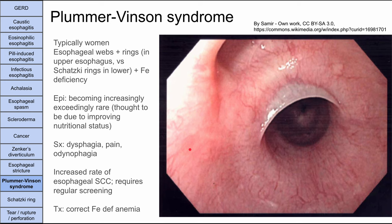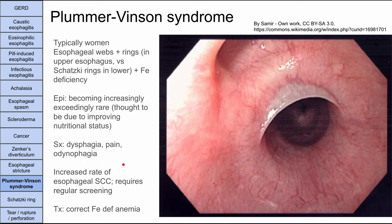Next is Plummer-Vinson syndrome, which is becoming increasingly rare. It typically presents in women with esophageal webs and rings in the upper esophagus — in contrast to Schatzky's rings, which occur in the lower esophagus. These women also present with iron deficiency anemia. It's thought to be caused by nutritional deficiencies, and as nutritional status has improved worldwide, it's seen less often. Symptoms include dysphagia, pain, and odynophagia, and it predisposes to esophageal squamous cell carcinoma, requiring regular EGD screening. Treatment is to correct the iron deficiency anemia.